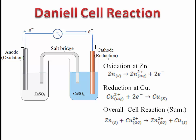The overall cell reaction is the sum of these two reactions. That means: solid Zn + Cu²⁺(aq) → Zn²⁺(aq) + Cu(s). In this way, due to the flow of electrons through the external metallic wire, current is produced and the galvanometer shows deflection. As per the definition, chemical energy is converted into electrical energy.